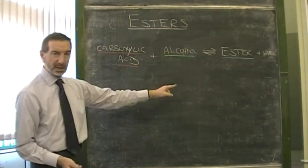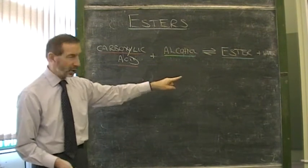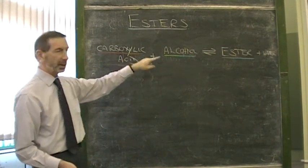As you can see here, the recipe is simple. To make any ester, you always need a carboxylic acid and an alcohol.